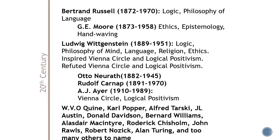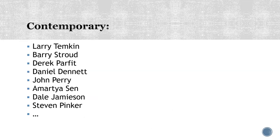Then of course we get to now. Philosophy done more or less now — which has a lot of overlap with 20th century — we call 'contemporary philosophy.' We don't call it 'modern'; modern is roughly 1500 to 1800. Contemporary philosophy is what's happening now. The people listed here are those on the reading list who are contemporaries — people who are still living and mostly still working. Barry Stroud is retired but still alive at 83; Derek Parfit died just over a year ago but is still kind of a contemporary. The rest are still alive, some still working.